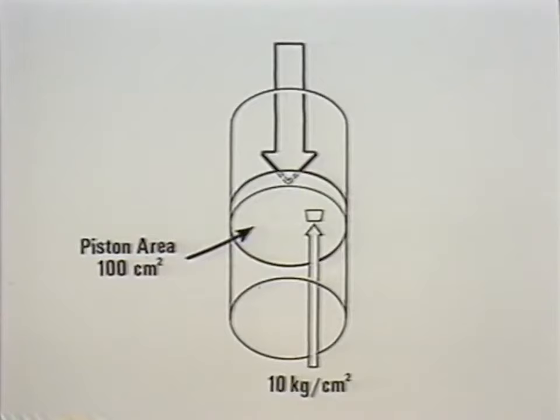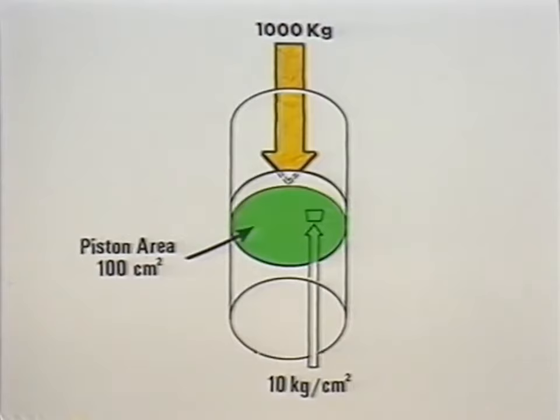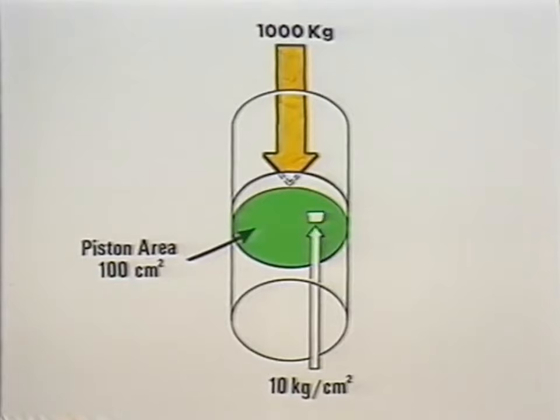The cylinder shown here has been subjected to a load of 1,000 kilograms. This load is evenly distributed over the entire piston area of 100 square centimeters. This means that every square centimeter is subjected to a load of 10 kilograms.